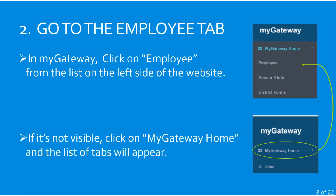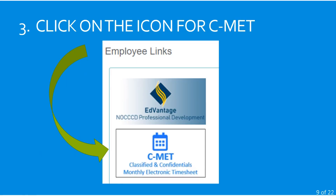Once you're in MyGateway, go to the Employee tab. If you don't know where it is, there's a list on the left side of the page. If you can't see it and it looks collapsed, click on it to open the dropdown and the Employee tab will appear. Once you get to the Employee page, there is a section with employee links — look for the CMET icon, the Classified and Confidential's Monthly Electronic Timesheet — and click on that to get to the landing page for the timesheet system.